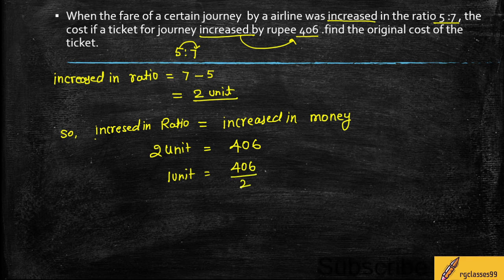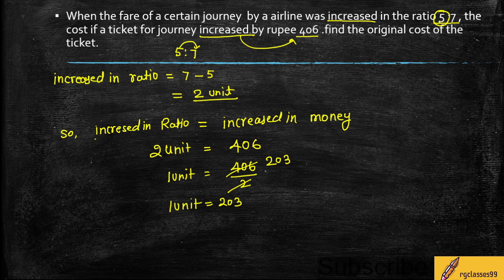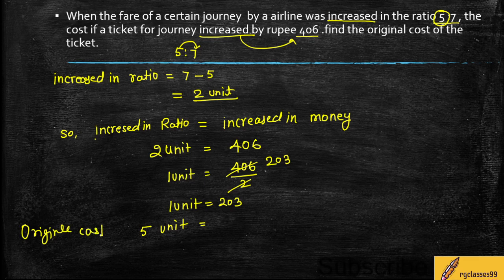We will divide 406 by 2. So 2 into 4 is 2, bring down 0, then 6 — giving us 203. So the value of 1 unit is equal to Rs. 203. Now, the original price was represented by 5 units, so we need to find the value of 5 units.